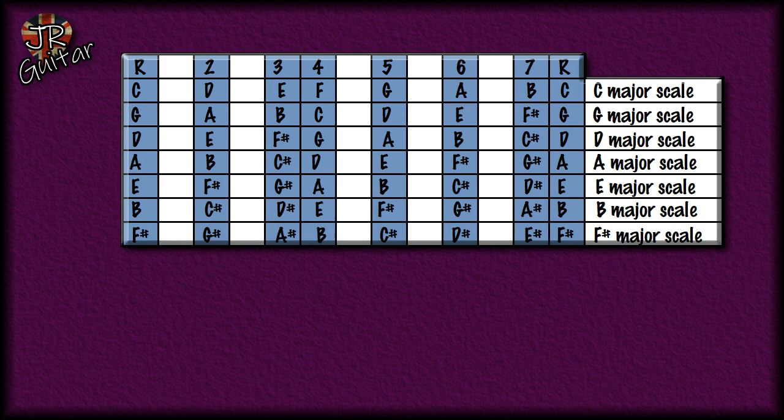You'll notice in that scale there is an E sharp note as the seventh note. There is no such note as E sharp — it is actually an F note — but we call it E sharp here because the etiquette when it comes to using sharps and flats is you don't use the same letter twice. So you can't have an F note and an F sharp note in the same scale; under these circumstances we refer to the F as an E sharp.